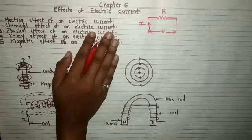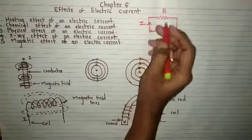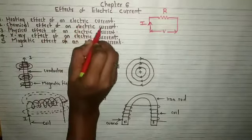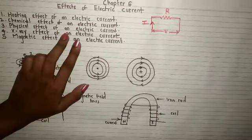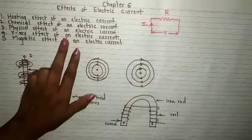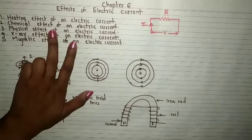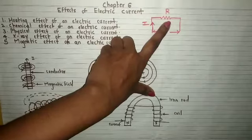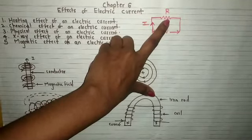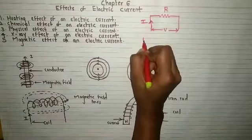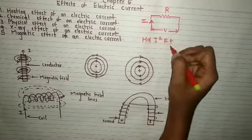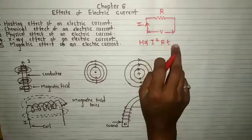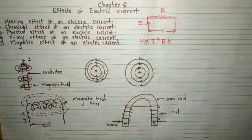This chapter is about what happens whenever the current flows through the circuit — heat is produced. We will see heating effect of an electric current first. According to Joule's law, whenever the electric current passes through the circuit, it is opposed by the resistance. Due to this, energy is required to overcome this resistance and this is converted into heat. We have learnt that heat is directly proportional to I²RT, where I is current, R is resistance, and T is time in seconds.